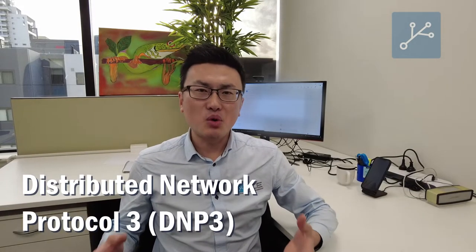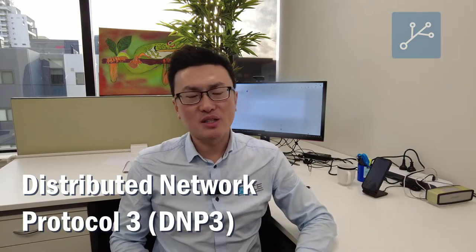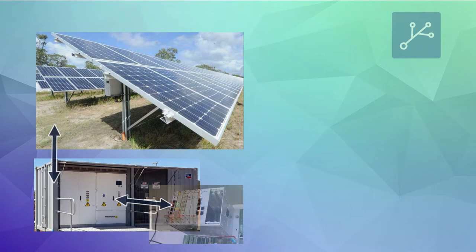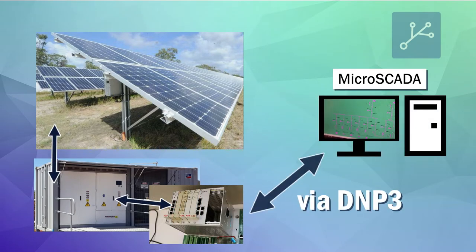We do notice that DNP3 has become more and more popular in the utility environment. For example, in solar power plants, we can set up MicroSCADA to communicate from MicroSCADA to the remote telemetry unit through DNP3.